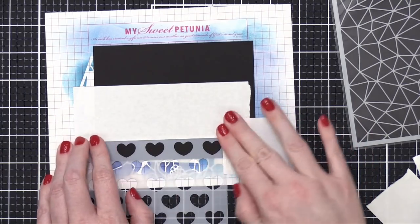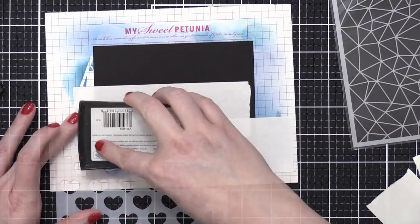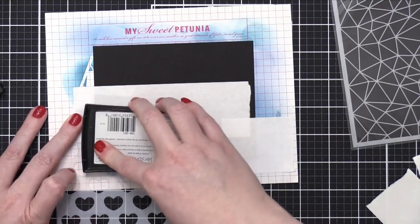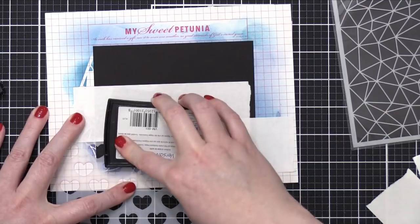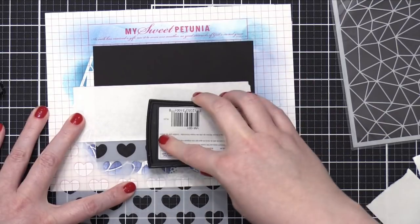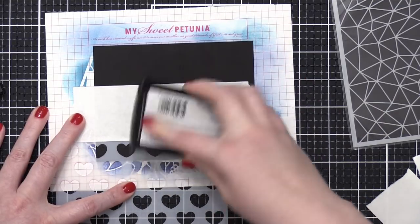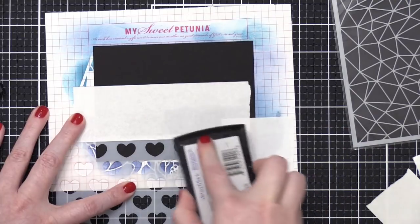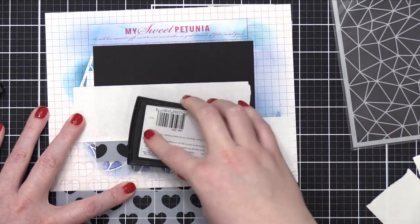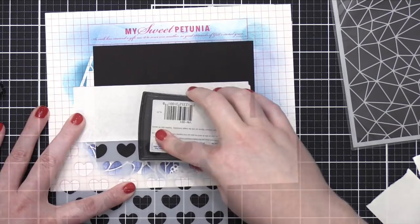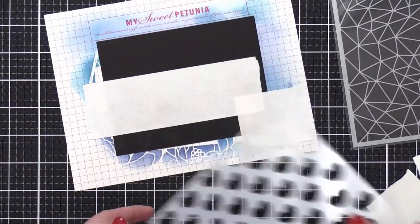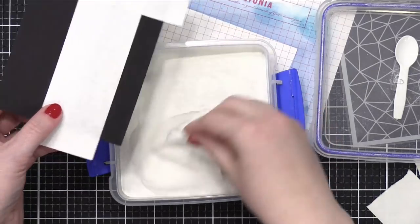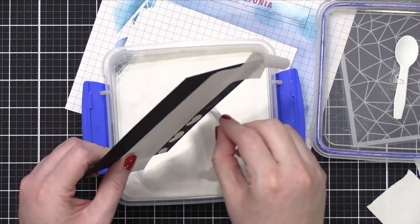So I've masked off that area, so I'm only going to be adding ink to that one section. Adding some VersaMark ink, because I am going to be making these hearts white with some white embossing powder. So I'm squishing my VersaMark ink pad down onto that stencil, making sure I get all those little crevices on the hearts, and then I can remove the stencil.